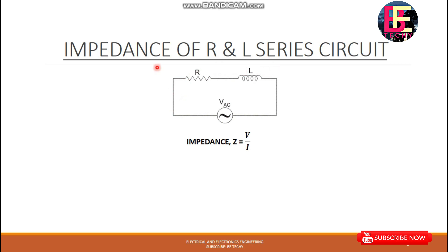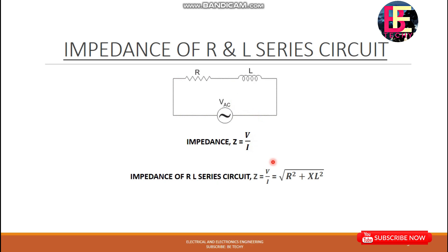Since VR and VL will add as vectors, we will add them as vectors and derive a whole equation. It is only one voltage value we need. If we get the value of the voltage using vector addition, then we get the impedance of the RL circuit.